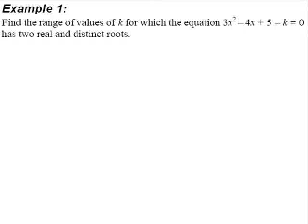So now, let us take a look at example 1. Find the range of values of k for which the equation 3x squared minus 4x plus 5 minus k equals 0 has two real and distinct roots.